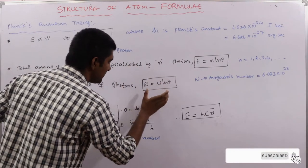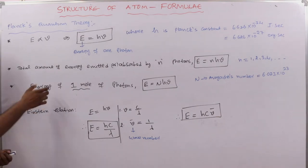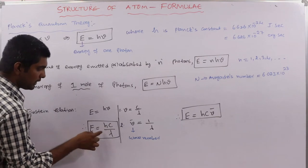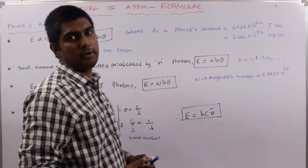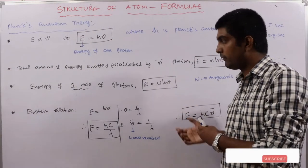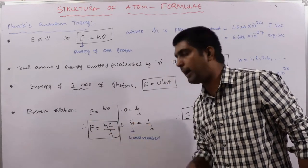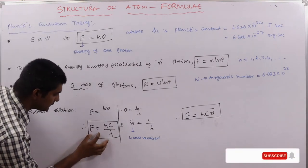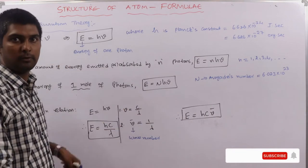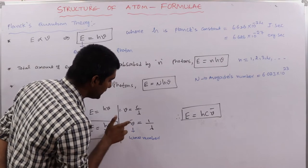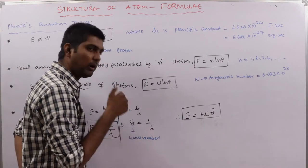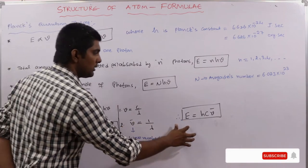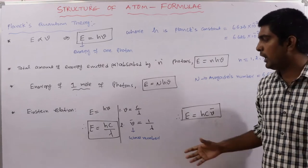Since ν = c/λ, substituting gives E = hc/λ. Another important relation uses wave number ν̄ = 1/λ, giving E = hcν̄. Depending on the information provided in the problem, use the suitable formula: E = hν, E = hc/λ, or E = hcν̄.